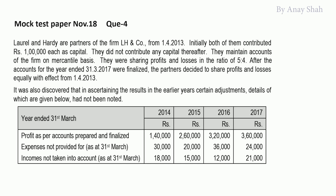It was also discovered that to ascertain the profit in the earlier years, certain adjustments had not been noted. The information given: 4 years' profits as per accounts finalized are 142, 63, 320, and 360 (thousands). Expenses not provided on 31st March for each of the 4 years are given, and incomes not taken into account on 31st March for each year are also given.